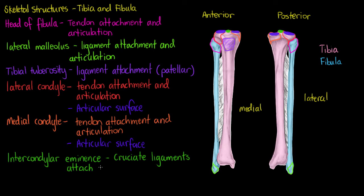Anteriorly and posteriorly to this elevation of bone are roughened depressions that are going to be attachment points for our anterior and posterior cruciate ligaments, which attach anteriorly and posteriorly. These are very important ligaments that aid in the structural integrity of our knee joint.